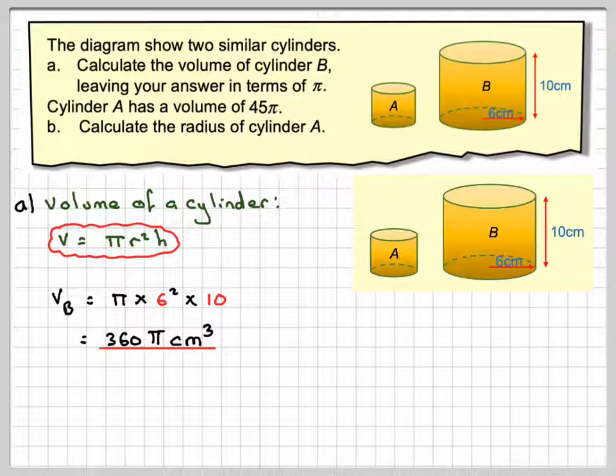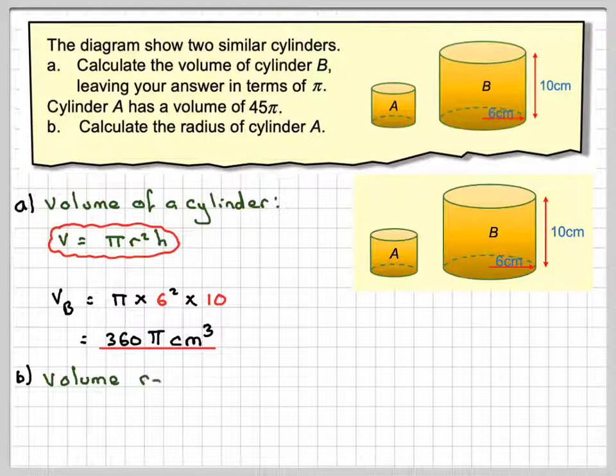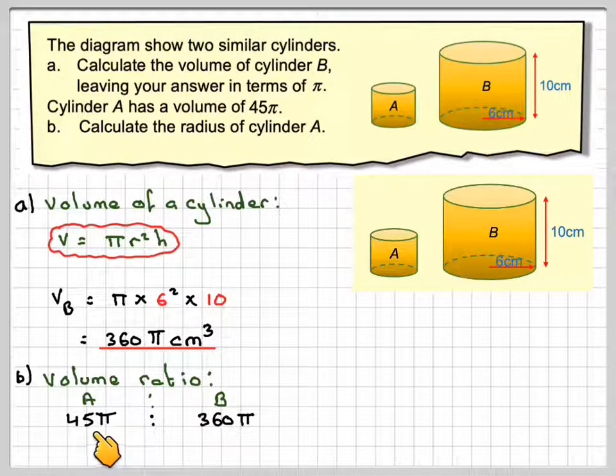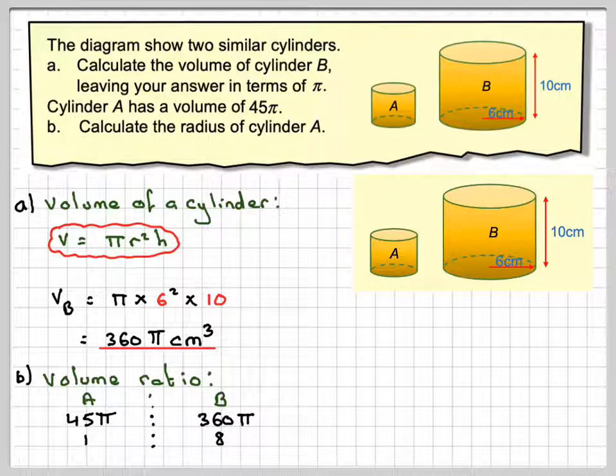So we've got similar shapes, something about ratio here. So the volume ratio from A to B will be 45 pi to 360 pi. So the pi's will cancel out, and 45 goes into 360. So it comes down to a ratio of 1 to 8. That's the volume ratio.